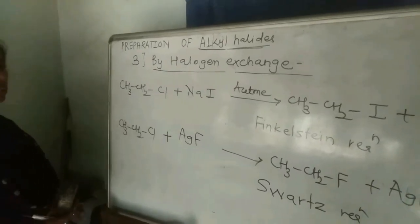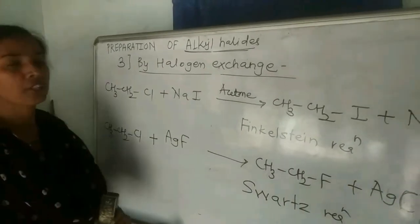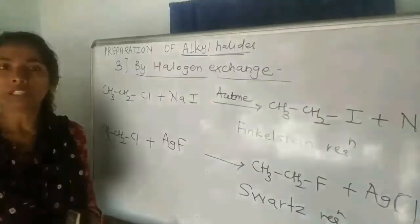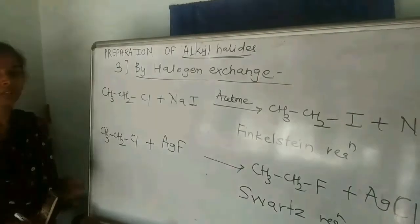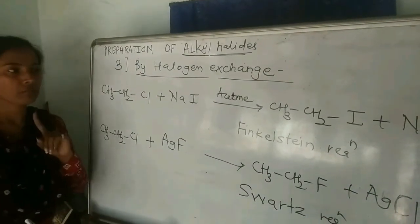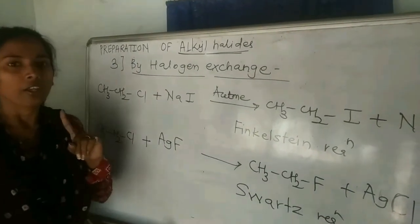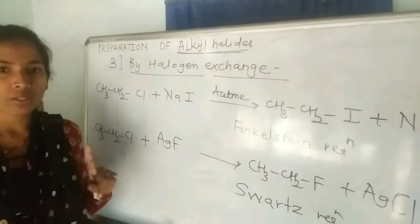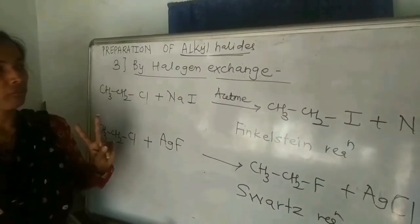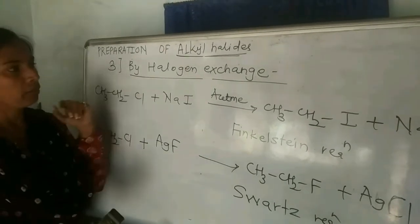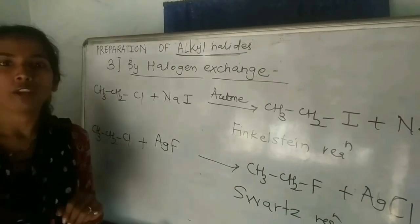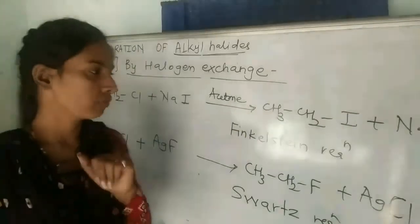That is all about the preparation methods of alkyl halides. There are three preparation methods: first from alcohols, second from hydrocarbons (alkanes and alkenes), and third by halogen exchange.